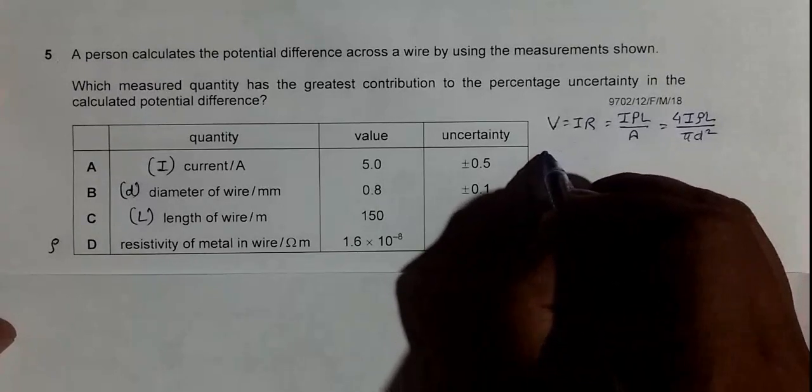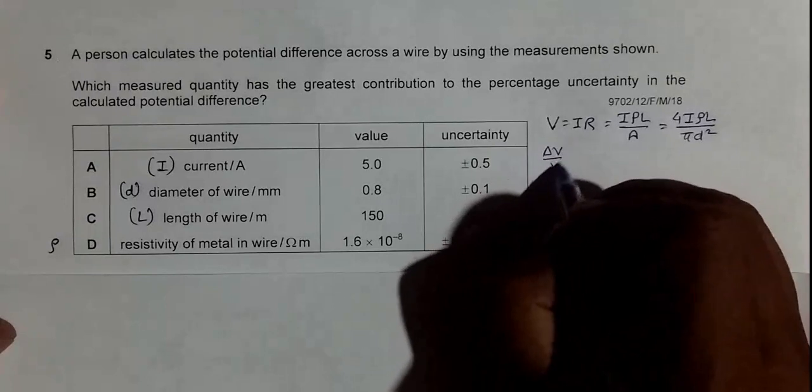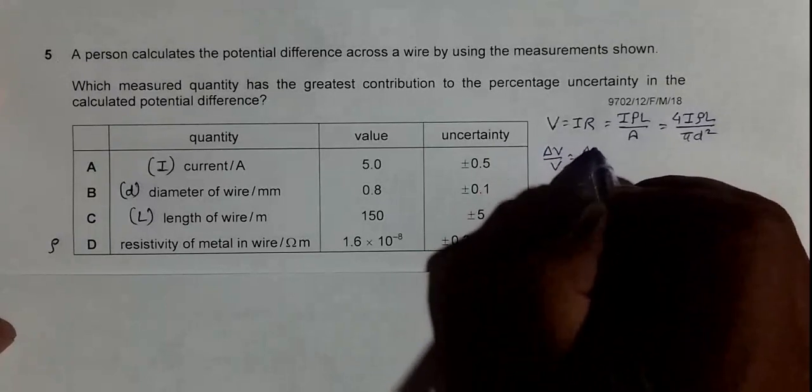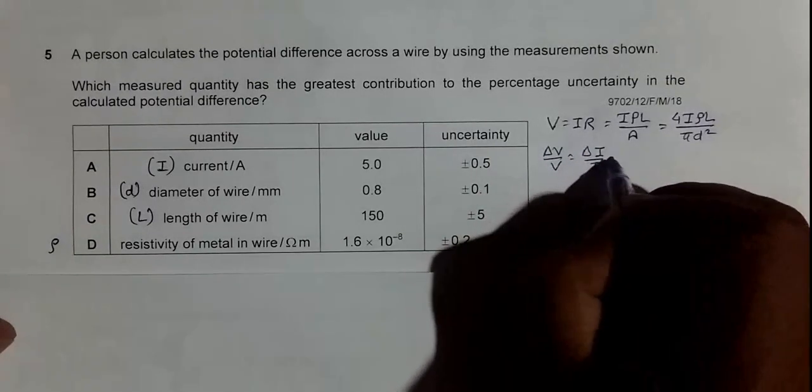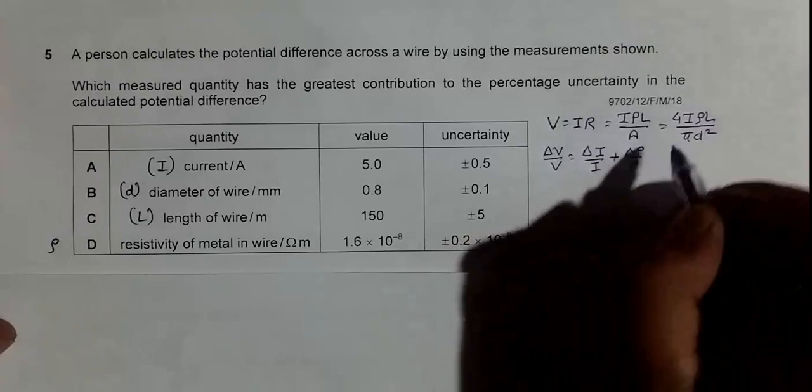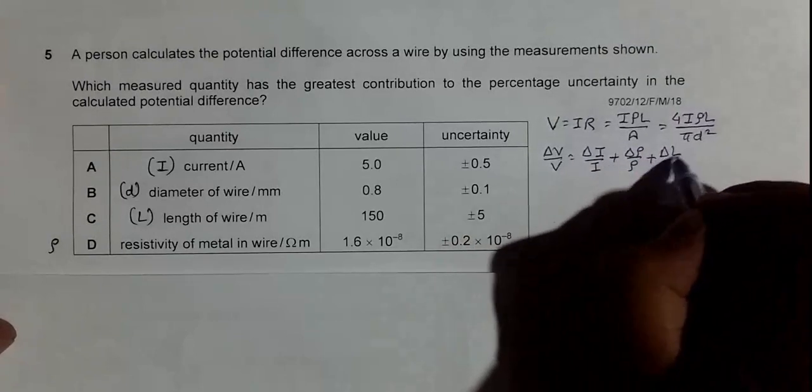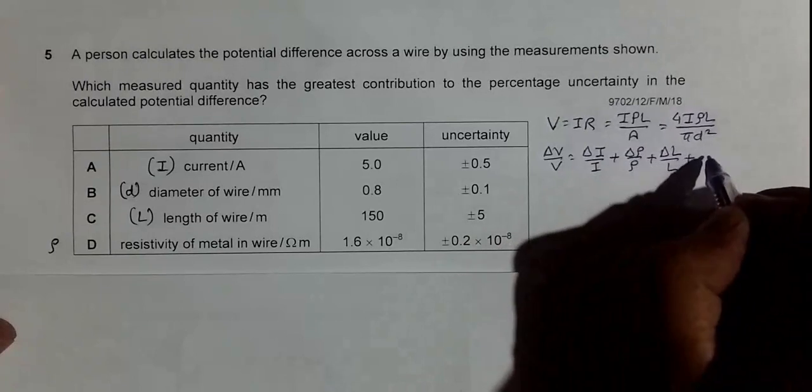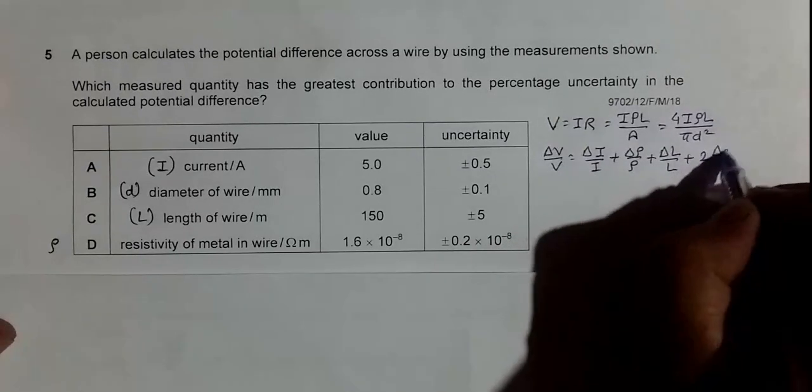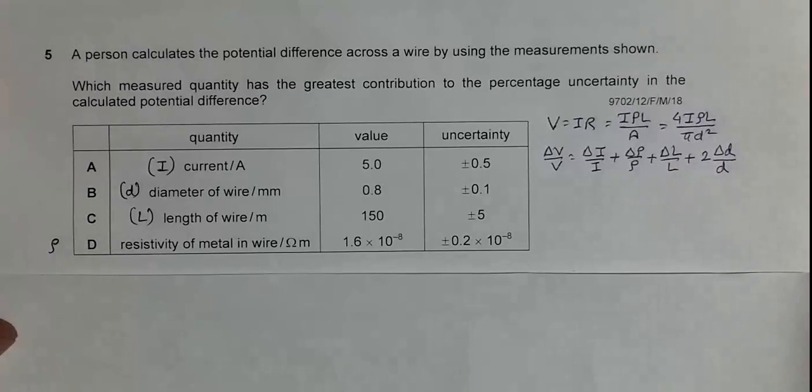The fractional uncertainty here will be ΔV by V should be equal to ΔI by I plus Δρ by ρ plus ΔL by L plus we have 2ΔD by D. So this is the formula for the fractional uncertainty of the potential difference.